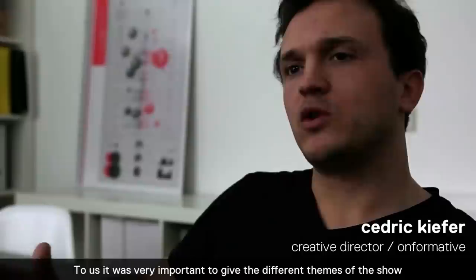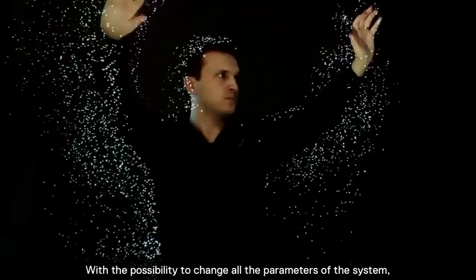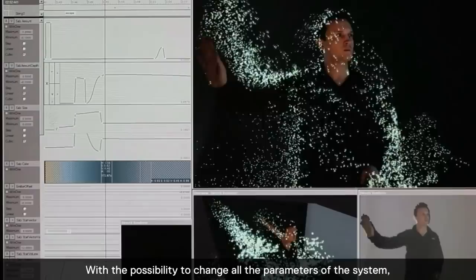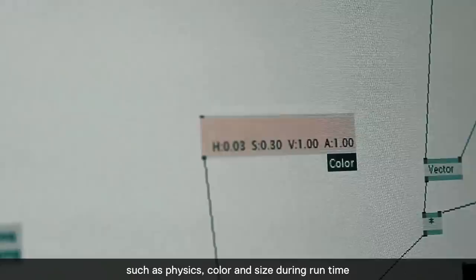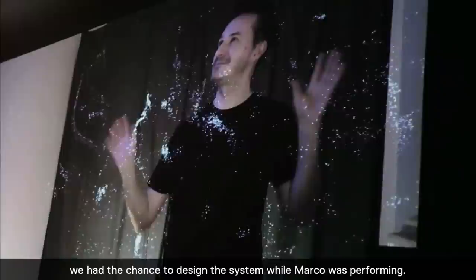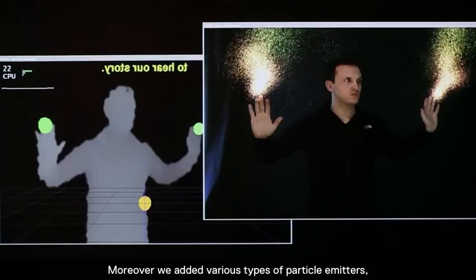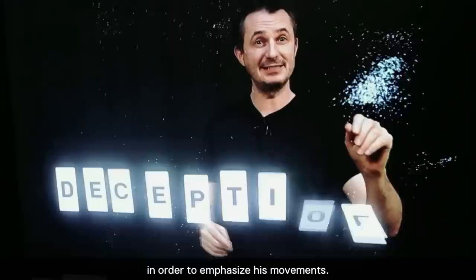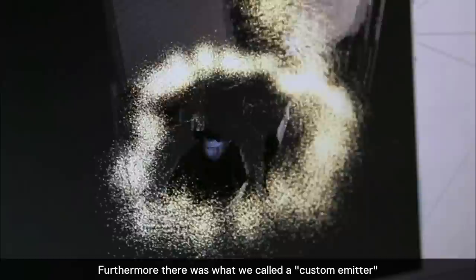For us it was very important that different elements of Marco's performance could be used in different particle systems. This is the global particle system, which is based on the RGB depth image that the Kinect offers. Various parameters of the system can be changed during runtime, such as physics, color and size. This global particle system can be used by different types of emitters, such as the ones we specifically attached to hand-tracking directly to Marco's hands to emphasize his movements.